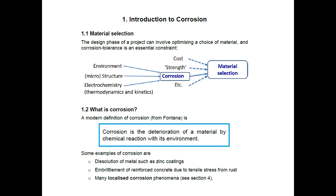To understand corrosion, let's look at a general definition from corrosion science. I want to use this definition from M.G. Fontana: 'Corrosion is the deterioration of a material by chemical reaction with its environment.' That's it. This is the general definition I want to use in this course for corrosion — that's the answer to the question: what is corrosion?